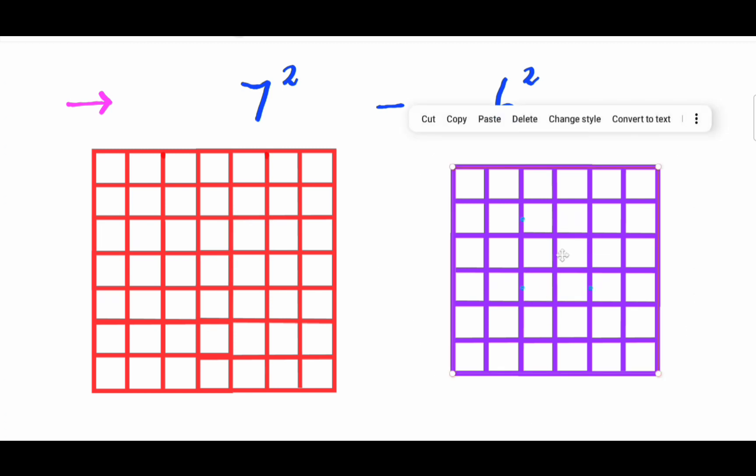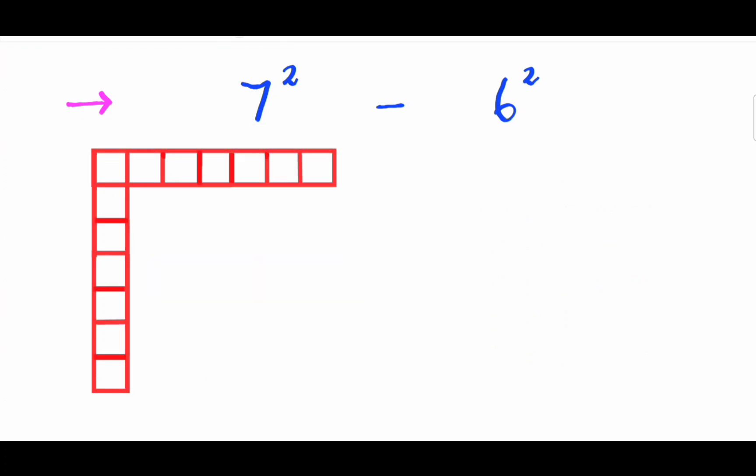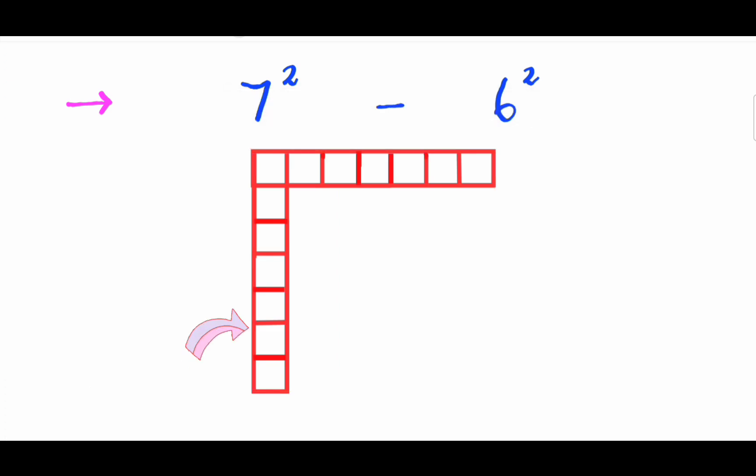First, think about what is left after subtracting the small square of blocks away from the larger one. This piece represents the difference 7 square minus 6 square. And there are 7 plus 6 which equals 13 blocks.